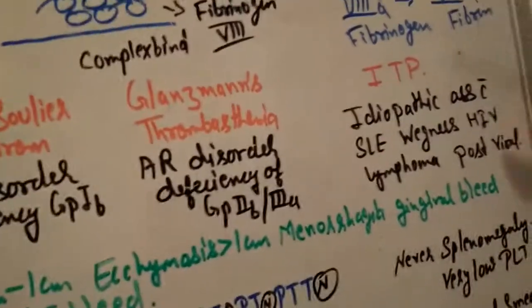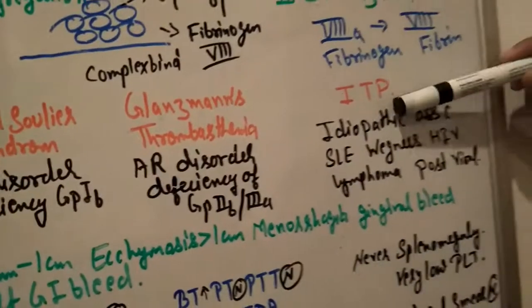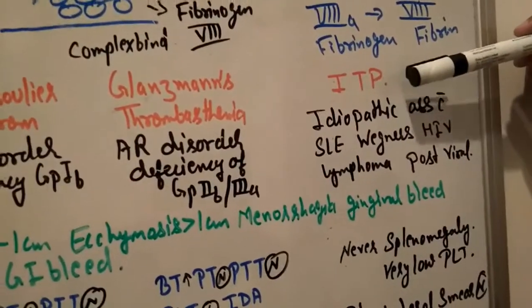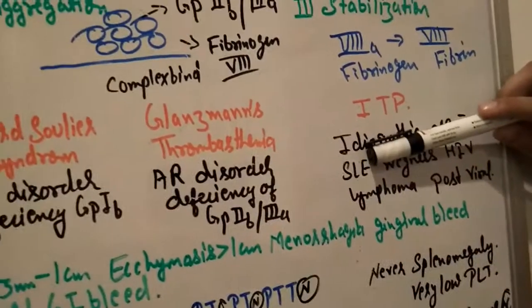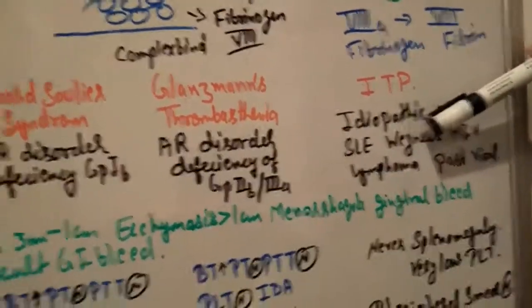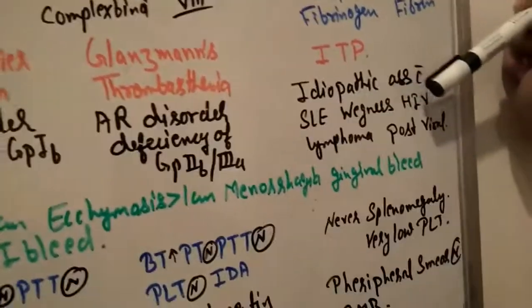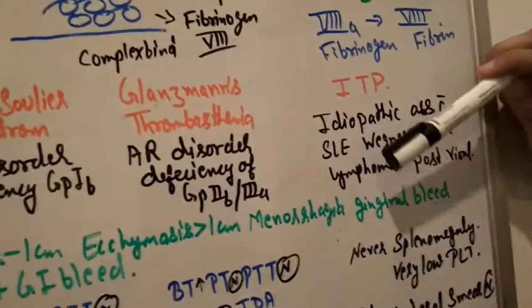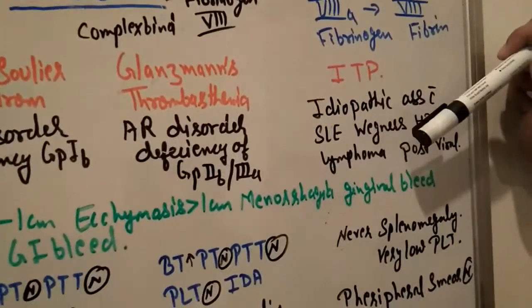ITP is idiopathic thrombocytopenic purpura. It's mainly idiopathic and platelets are very, very low. It's associated with systemic lupus erythematosus, autoimmune diseases like vasculitis and Wegener's, HIV, immunocompromised states, lymphomas, blood tumors, and post-viral infections.